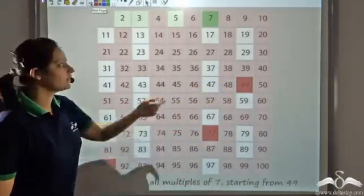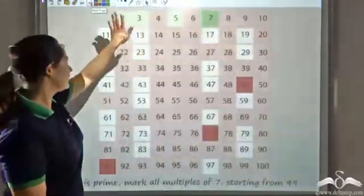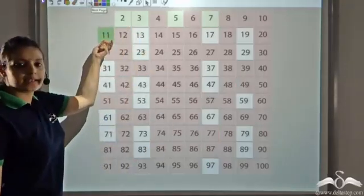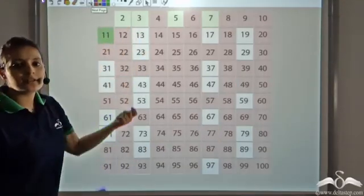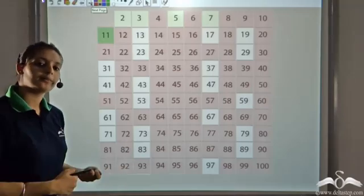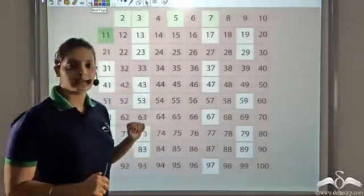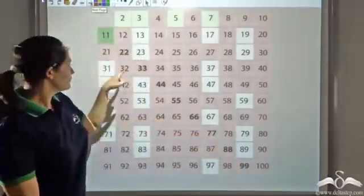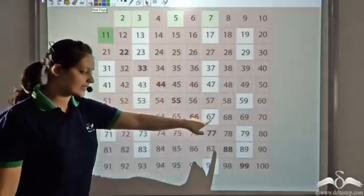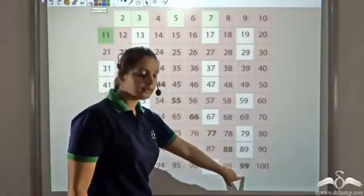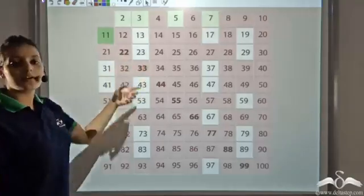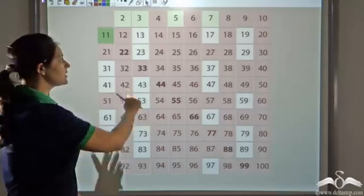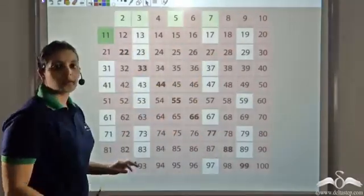Now the next number I'm left with is 11, so 11 becomes the next prime number. Let's see all the multiples of 11 in this list — 22, 33, 44, 55, 66, 77, 88, and 99. I see that all these numbers have already been removed from my list. So I stop my process here and can say that the remaining numbers in the list are all prime.